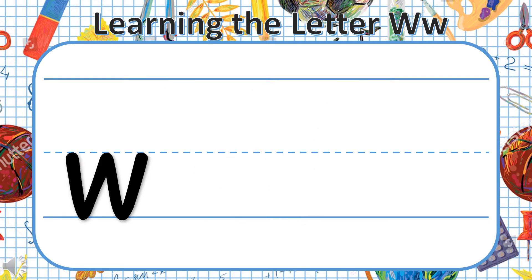Your lowercase W is the same as your uppercase W. The only difference is we are starting at the middle line. From the middle line we draw a slanted line to the bottom, then all the way back to the middle line, and then again down to the bottom line and back up to the middle line. So again it looks like two letter V's put together.